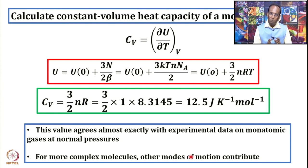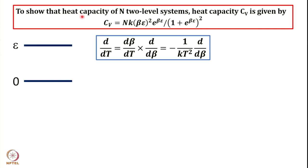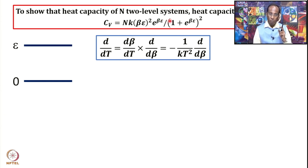Now let us go to another type of question. The question is: show that the heat capacity of N two-level systems, that is Cv, is given by the expression Cv = Nk(βε)² × exp(βε) / (1 + exp(βε))², where β = 1/kT. This expression allows us to calculate Cv as a function of temperature from the knowledge of the energy separation. The given system is a two-level system with separation ε between the ground state and the excited state.